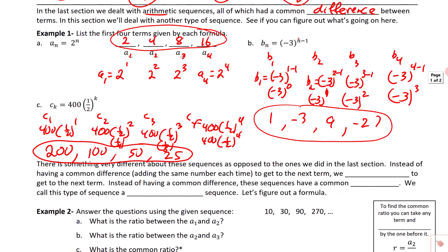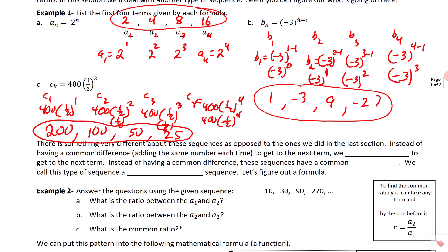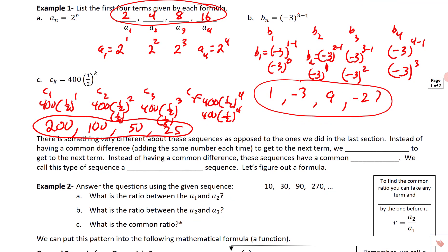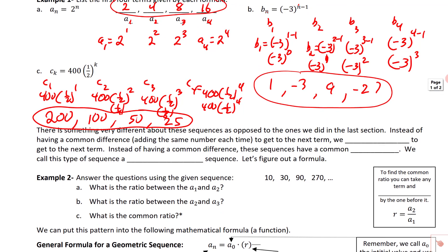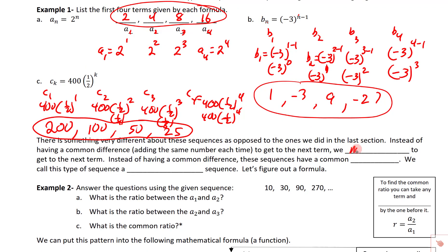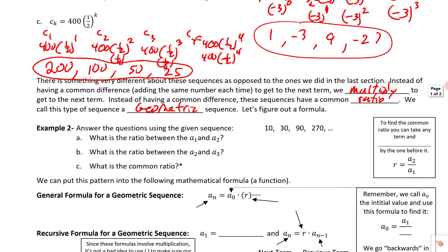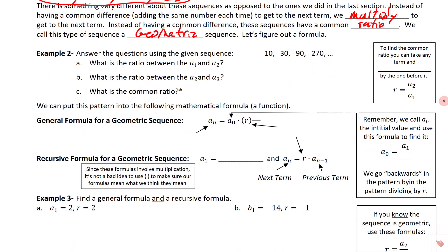These sequences are very different from arithmetic ones. With arithmetic, terms went up or down by the same amount — they had a common difference, so we were adding the same number every time. With geometric sequences, we multiply to get from one term to the next. Instead of a common difference, we say these have a common ratio, and we call this type of sequence a geometric sequence.